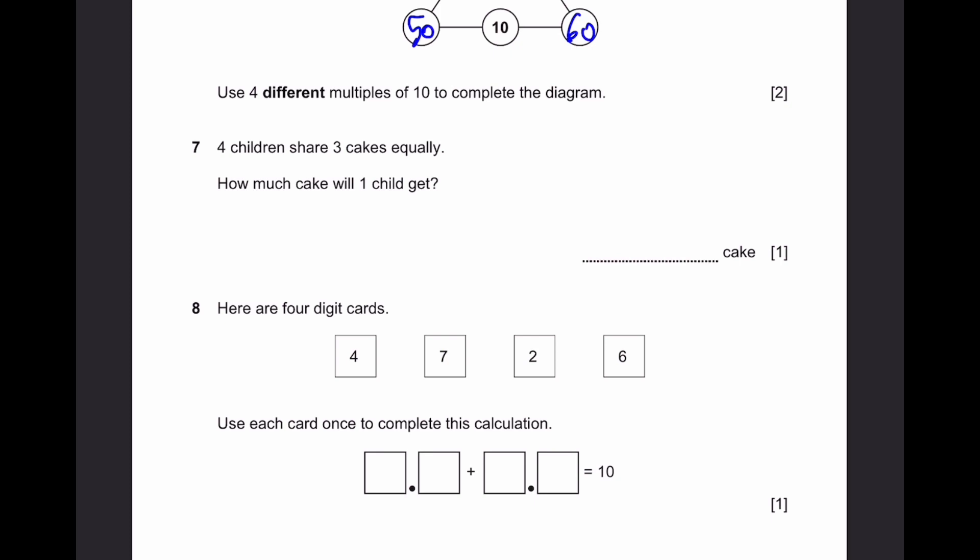Question 7. 4 children share 3 cakes equally. How much cake will 1 child get? So that'll be 3 by 4. That's it pretty much. 3 cakes, 4 children. So 1 child will get 3 by 4 cake. That's my answer.